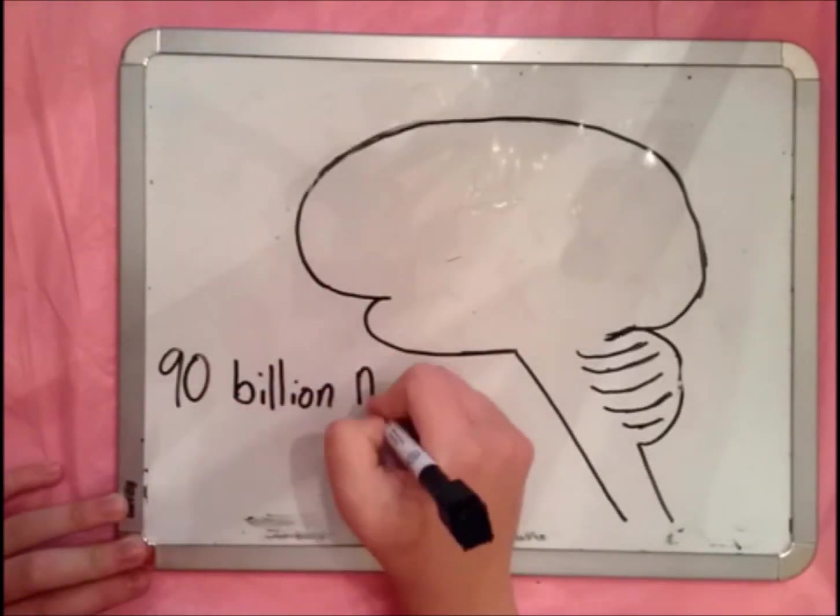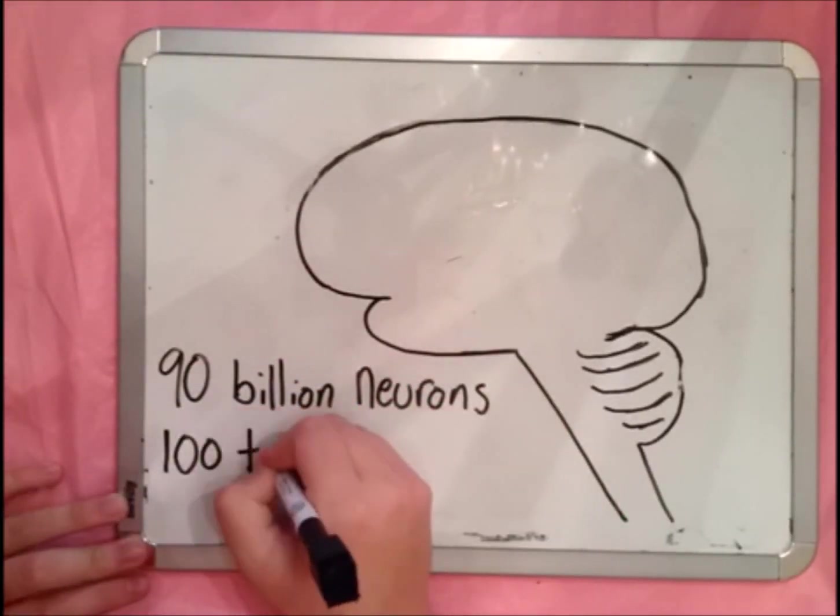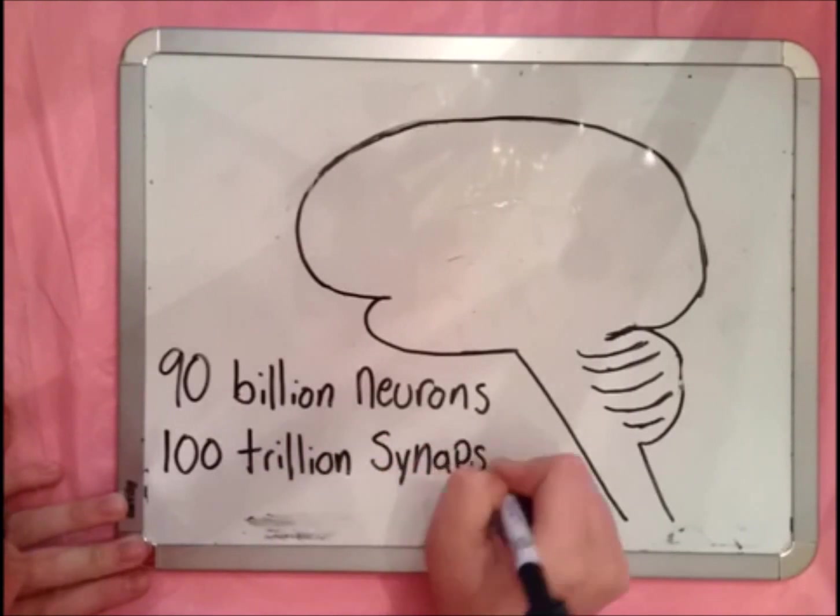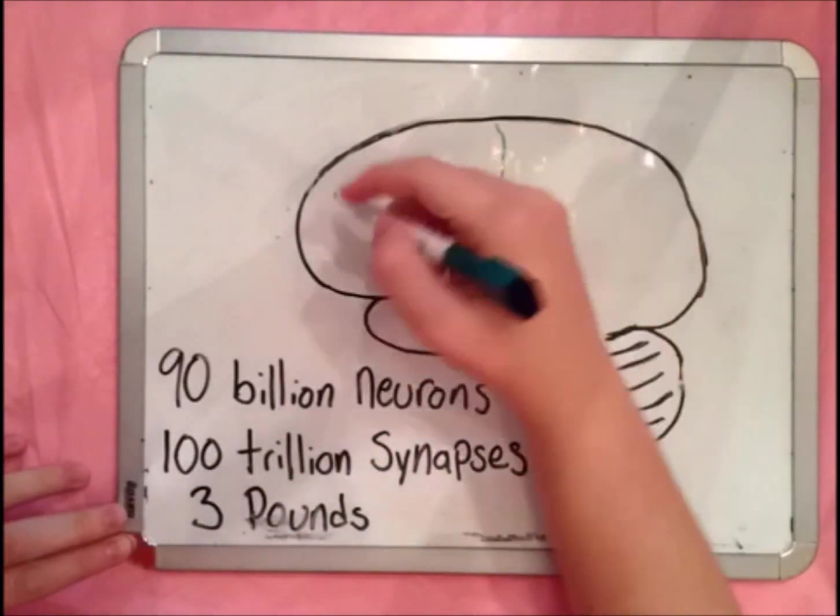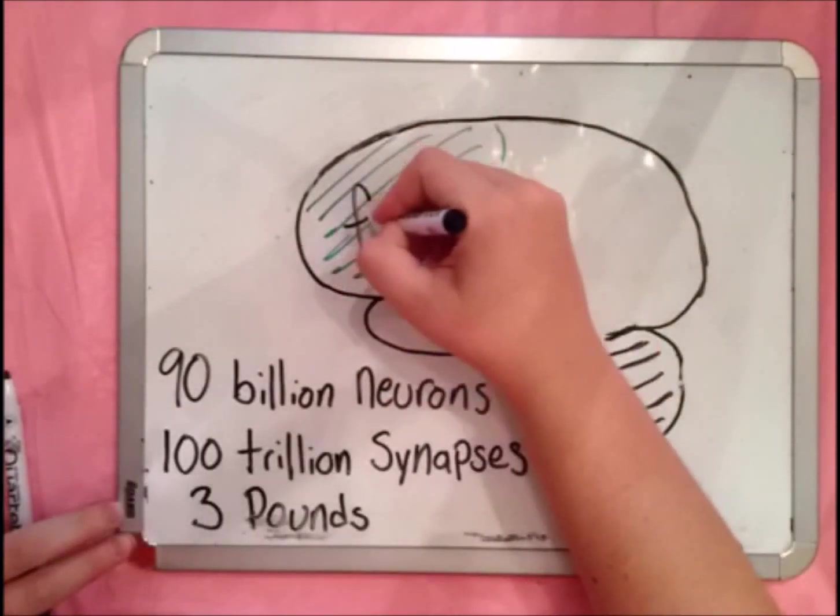Your brain is a complex structure of about 90 billion neurons and 100 trillion synapses that weighs about 3 pounds. It is alone in the darkness of your skull. There are different regions in the brain that control different things.